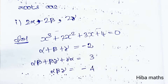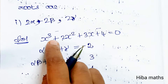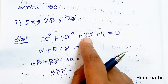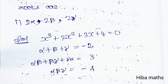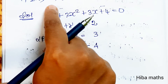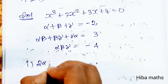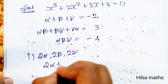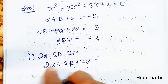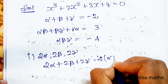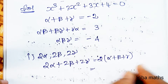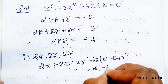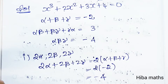For roots 2α, 2β, 2γ: first, S1 = sum of roots = 2α + 2β + 2γ. Taking 2 as common, we get 2(α + β + γ). The value of α + β + γ is −2, so S1 = 2 × (−2) = −4.